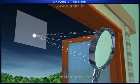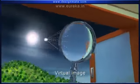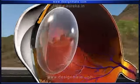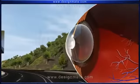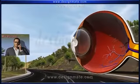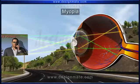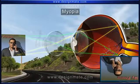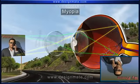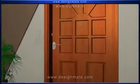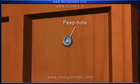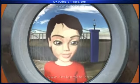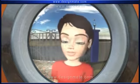The image formed in this case is a virtual image. The concave lenses are used to correct short-sightedness in people suffering from myopia. A concave lens is also used in the peepholes of doors to get a minimized image of the person on the other side of the door.